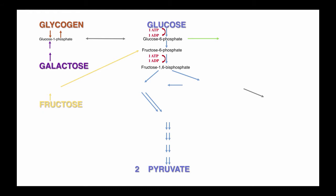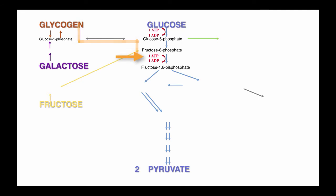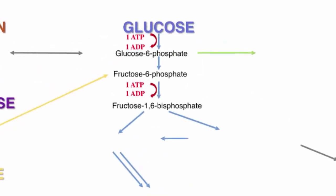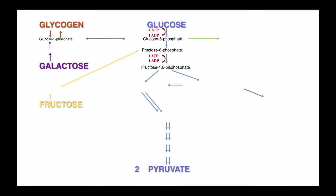Following to the next step, fructose 6-phosphate gets another phosphate, which also takes one more molecule of ATP. Therefore, glucose needs two ATP to be ready to be metabolized, whereas glycogen only needs one. Once both phosphates are added, the molecule becomes fructose 1,6-bisphosphate. The bisphosphate just means there are two phosphates, and the 1 and the 6 refer to the carbons they are attached to.